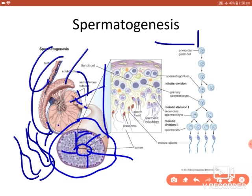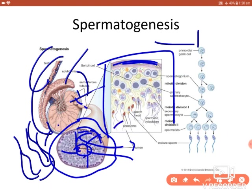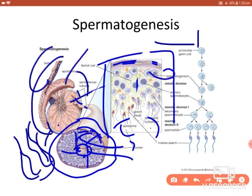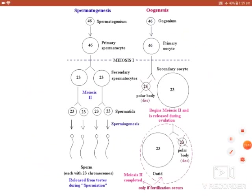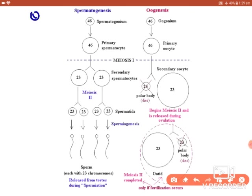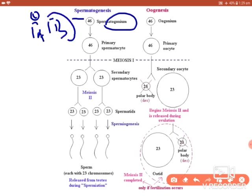When we take a magnified view of the wall of the seminiferous tubule, you can see the outer area and the inner part — that is the lumen. Here you can see different stages of cells from the spermatogonium to the spermatids, which form part of spermatogenesis. The germinal epithelial cell undergoes mitotic division and forms the spermatogonia. There are Type A and Type B spermatogonia.